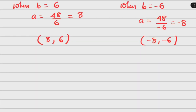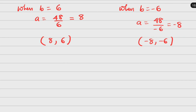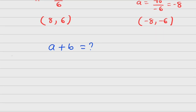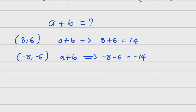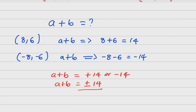These are the two sets of values. We need to find a + b. Using the first set (8, 6): a + b = 8 + 6 = 14. Using the second set (−8, −6): a + b = −8 + (−6) = −14. In conclusion, a + b = ±14.